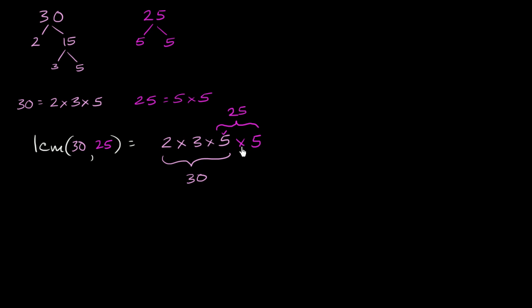And this is the least common multiple. If we just wanted a common multiple, we could have thrown more factors here and it would have definitely been divisible by 30 or 25. But this has the bare minimum of prime factors necessary to be divisible by both 30 and 25. If I got rid of any one of these, I wouldn't be divisible by both anymore. If I got rid of this 2, I wouldn't be divisible by 30. If I got rid of one of the 5s, I wouldn't be divisible by 25.